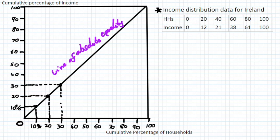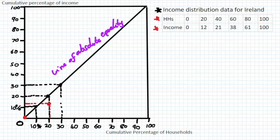In practice, however, there is no country that has absolute equality — no country where income is spread out perfectly evenly amongst households. What we have on the right-hand side is household percentage and income percentage data for Ireland for 2016. With zero households we have zero income, giving our starting point. The poorest 20% of households hold 12% of the income, so we plot that second point on our Lorenz curve.